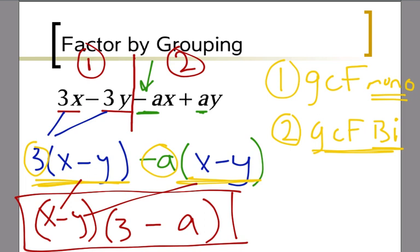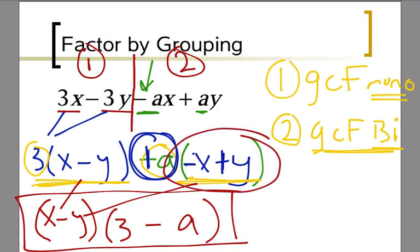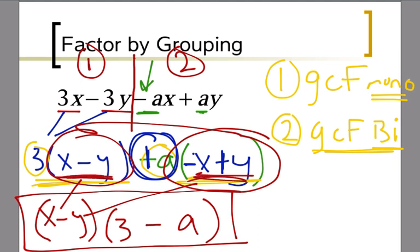So I first separate it, cut it down the middle, do GCF of the monomial, and then I look for a binomial factor. One important note: if I hadn't pulled out a negative a — if this were a positive a — this would have been a negative x and a positive y, and those would not be the same binomial, so I wouldn't have been able to factor. You've got to make sure these are actually the same binomial in order to do the second step.